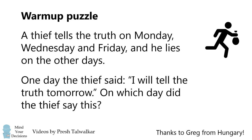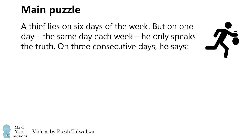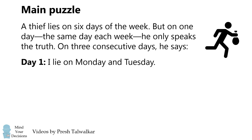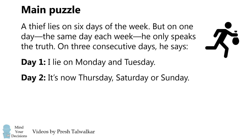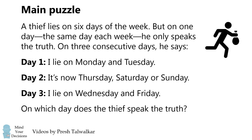I thank Greg from Hungary for suggesting this problem. Now, on to the main puzzle. A thief lies on six days of the week, but on one day, the same day each week, he only speaks the truth. On three consecutive days, he makes the following statements. On day one: 'I lie on Monday and Tuesday.' On day two: 'It's now Thursday, Saturday, or Sunday.' On day three: 'I lie on Wednesday and Friday.' The question is, on which day does the thief speak the truth?